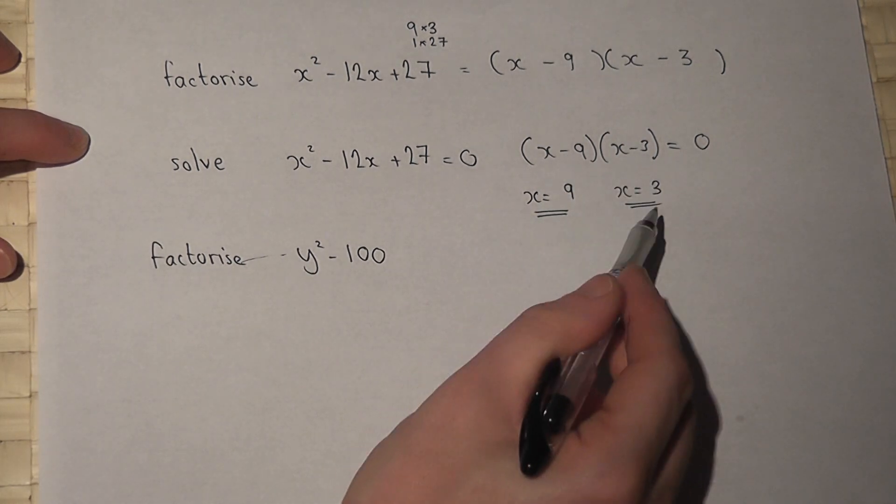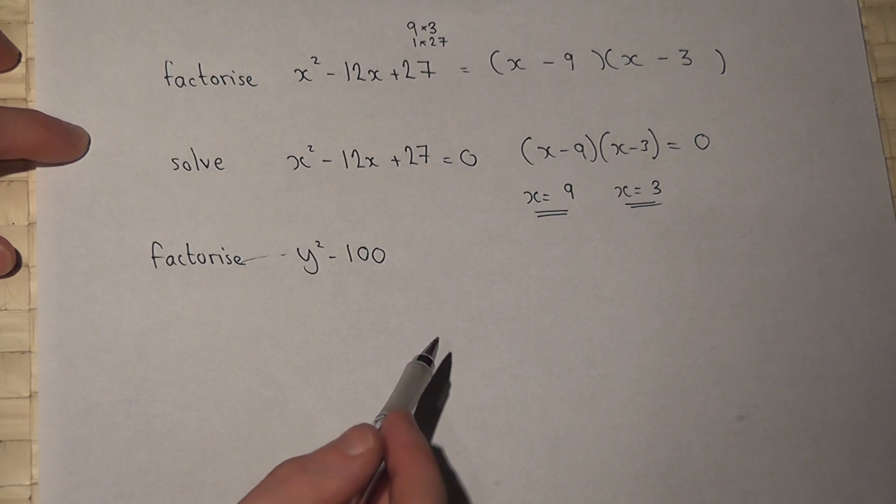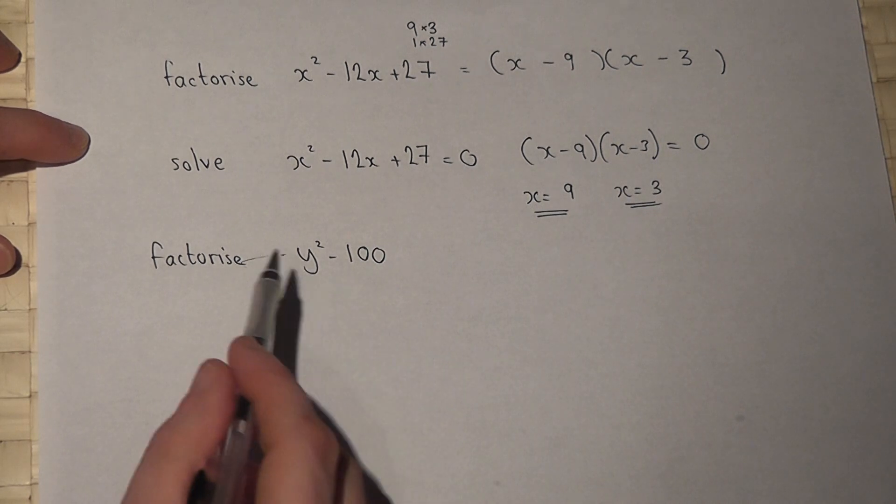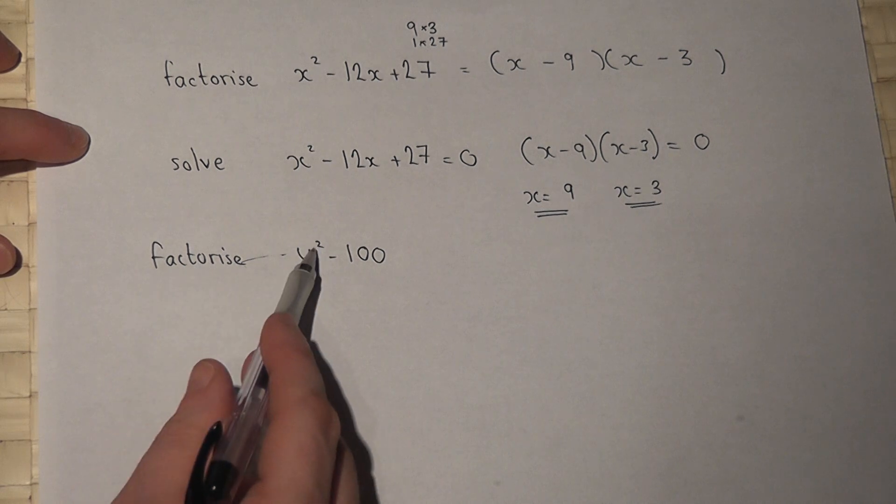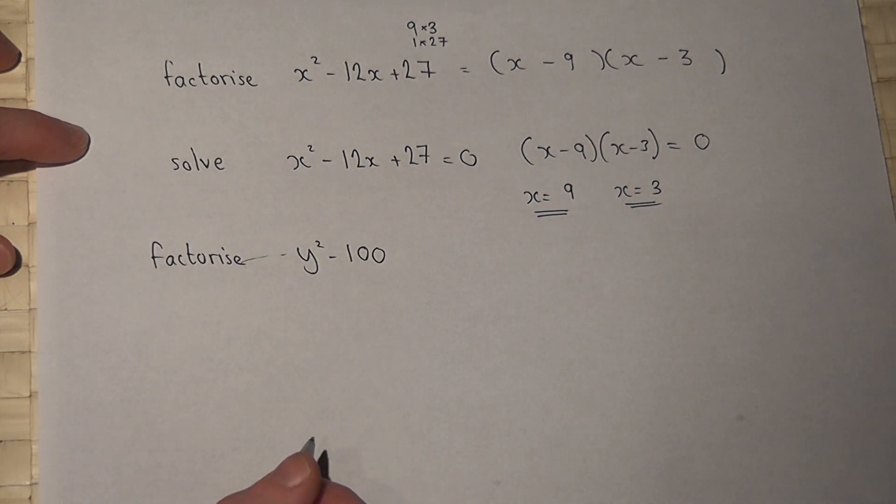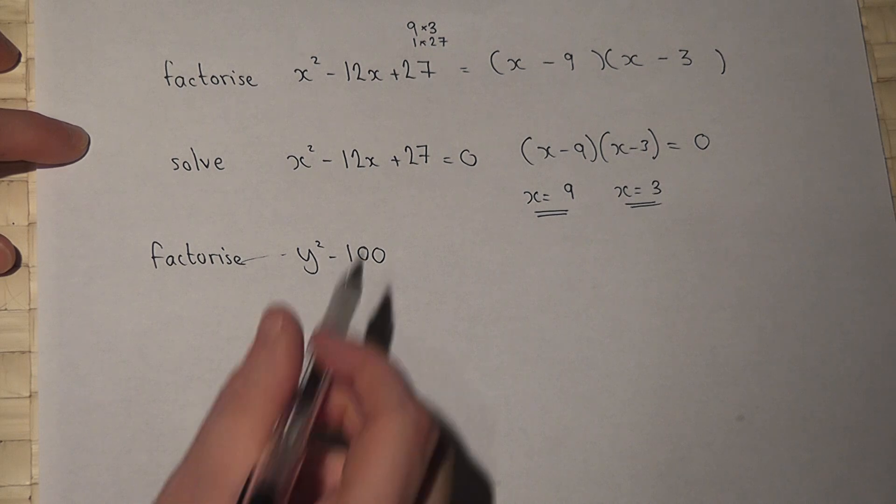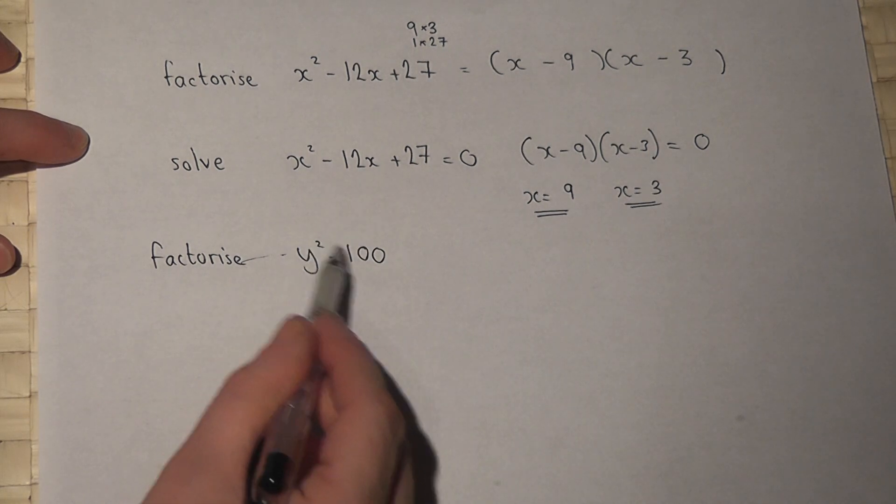These are the two solutions to the given equation. The final example asks to factorize y² - 100. This is a special case called the difference of two squares—this is y² and this is 10².